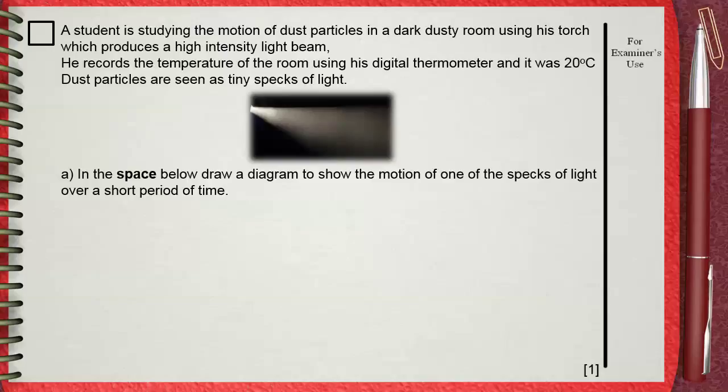So, draw a circle that will represent the dust particle. Then, draw successive arrows that point in different directions to represent the zigzag motion.